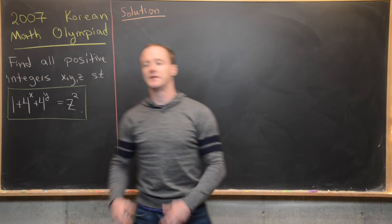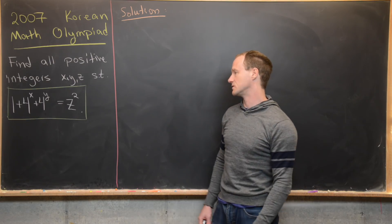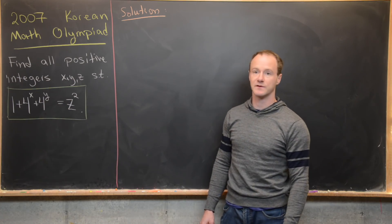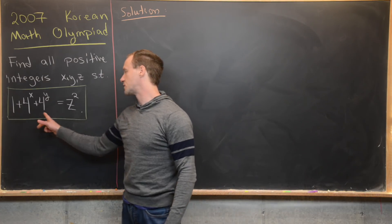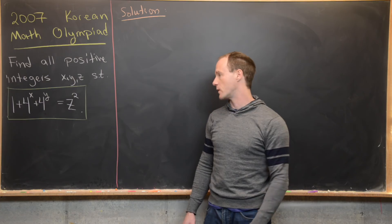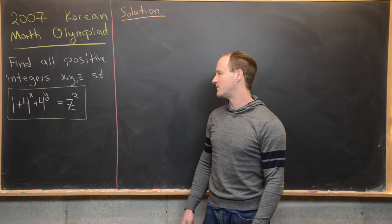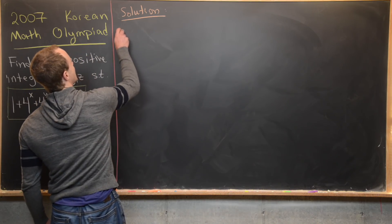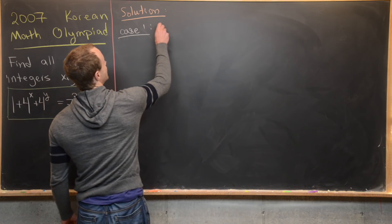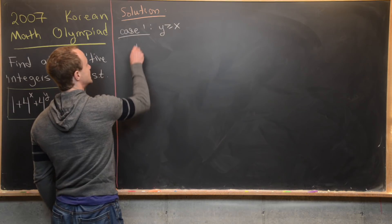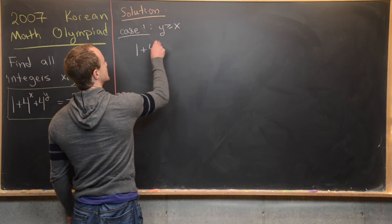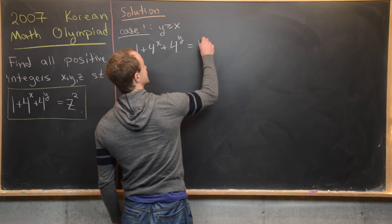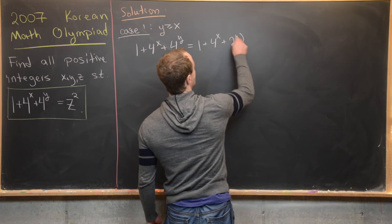Now we're ready to jump into a solution, starting with the obvious solutions. Given that the right hand side is a perfect square, the left hand side also has to be a perfect square. Note that 1 is 1 squared, and 4 to the y is the same as 2 to the y, quantity squared. That gives us a hint of some factorization of the left hand side, but we need to break it down into cases. Let's look at case one: y is bigger than or equal to x. We write 1 plus 4 to the x plus 4 to the y, which is the same as 1 plus 4 to the x plus 2 to the y, quantity squared.